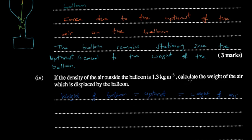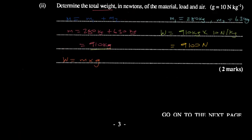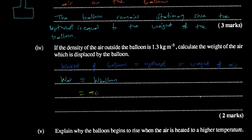Therefore, if we need to calculate the weight of the displaced air, we can simply state that the weight of the air displaced equals the weight of the balloon, which we calculated previously as 9100 newtons.